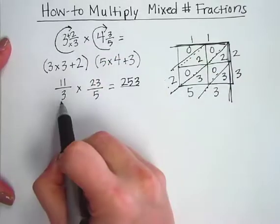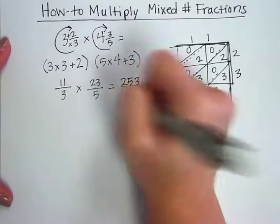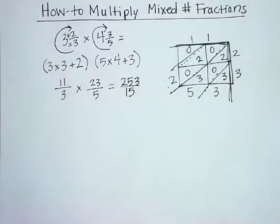And then I multiply the bottom, the denominators. 3 times 5 is 15. Great, so now I have my answer of 253 over 15.